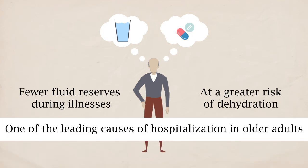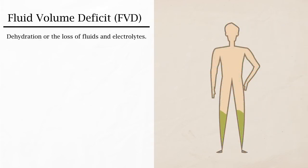Fluid volume deficit, or FVD, is dehydration or loss of fluids and electrolytes. It may be due to vomiting, diarrhea, excessive sweating, fever, or nasogastric suction.